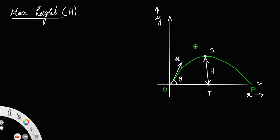How will you find an expression for height? For that, first you should resolve u — the initial velocity — into components: one along the x-axis and the other along the y-axis. The component along the x-axis will be u cos theta, and the component along the y-axis will be u sin theta.